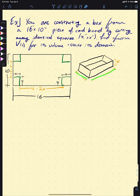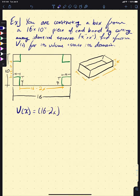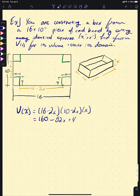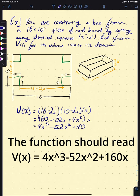The height of the box is simply X — that's what gets folded up. The long side of the base is 16 minus 2X, because we remove an X from each end of the 16-inch side. Similarly, the short side is 10 minus 2X. So our volume as a function of X is V(X) = (16 − 2X)(10 − 2X)(X).